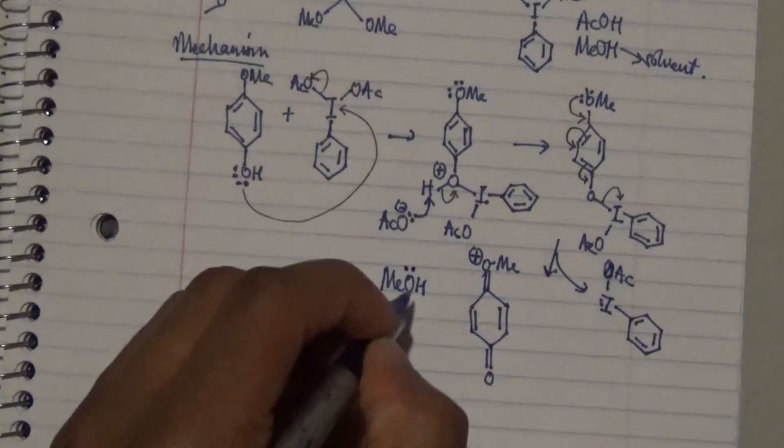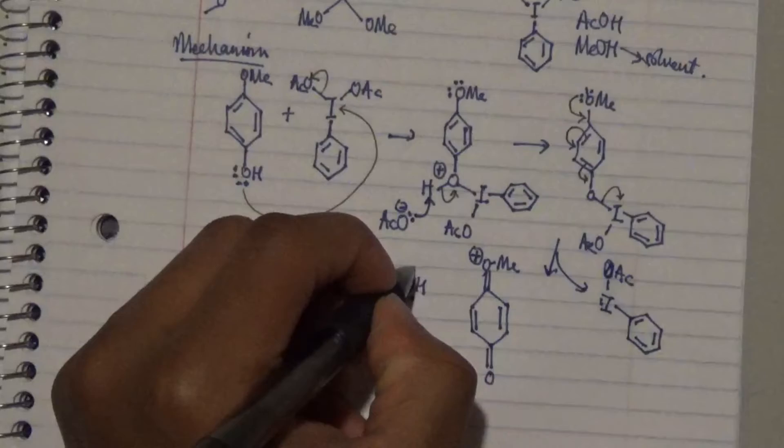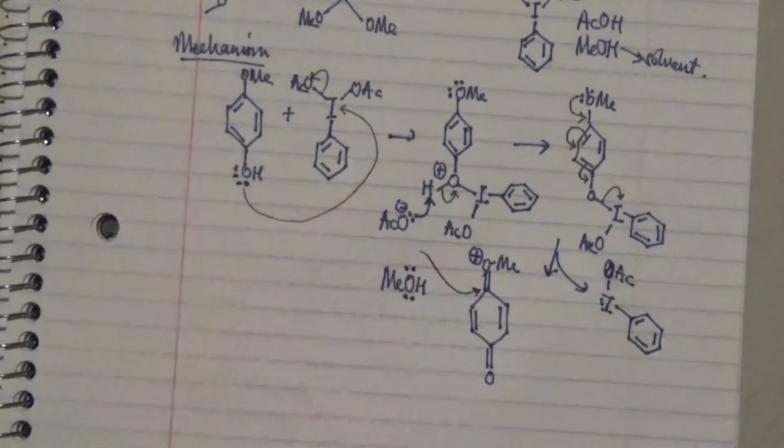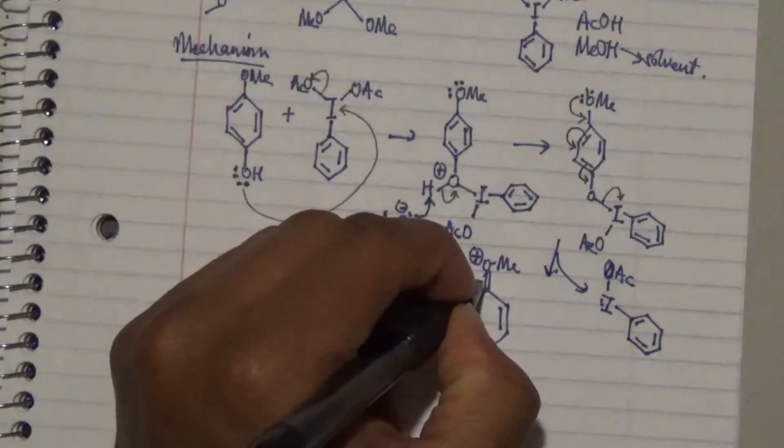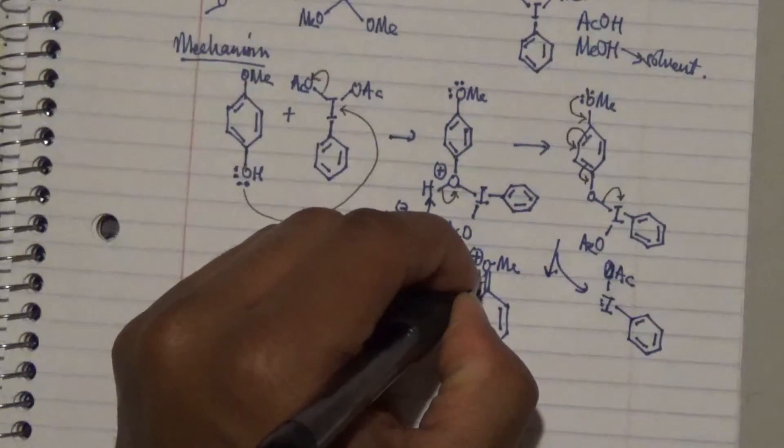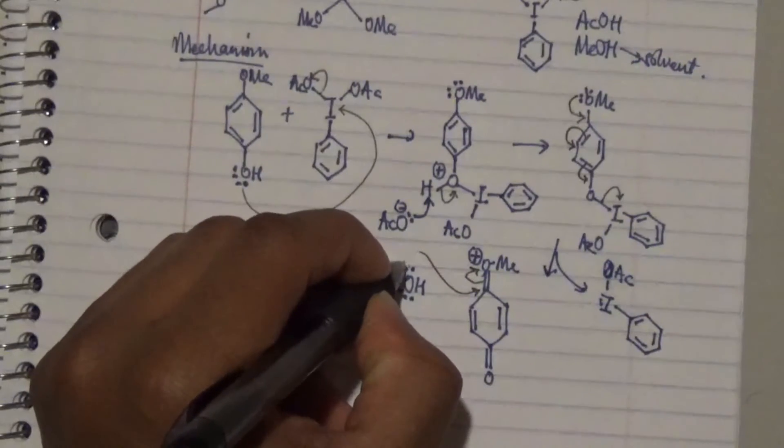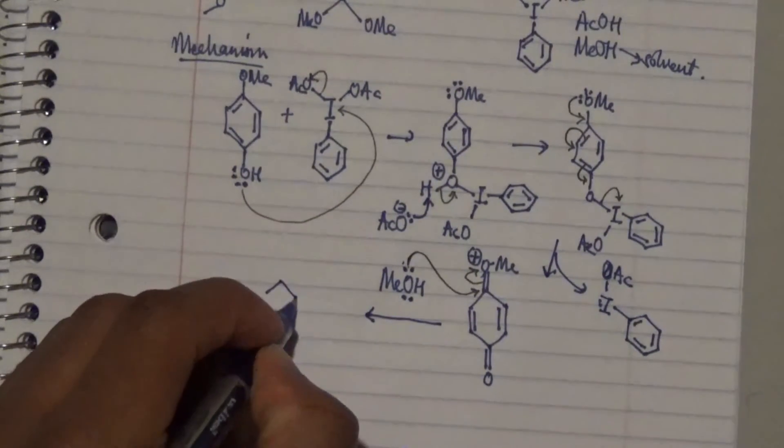What happens then is that this lone pair attacks this particular carbon, and then this particular bonding pair becomes a lone pair on the oxygen, thereby making it become neutral. So what you get is this structure.